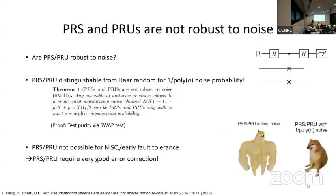We can also ask another limit: when running on a quantum computer, we always deal with noise. Are PRS and PRUs robust to noise? We showed that this is not possible — if a PRS or PRU is subject to even very small noise, even 1 over poly(n) noise, there is an efficient algorithm to distinguish it from Haar-random states, which are inherently pure. For example, you can use the swap test. So as soon as there is even a little noise, PRUs stop being PRUs and PRS stop being PRS. This means PRS and PRUs are not practically realizable in the NISQ era, where we expect some amount of noise. To actually prepare them in practice, we need very good error correction bringing noise down to an exponentially small level.